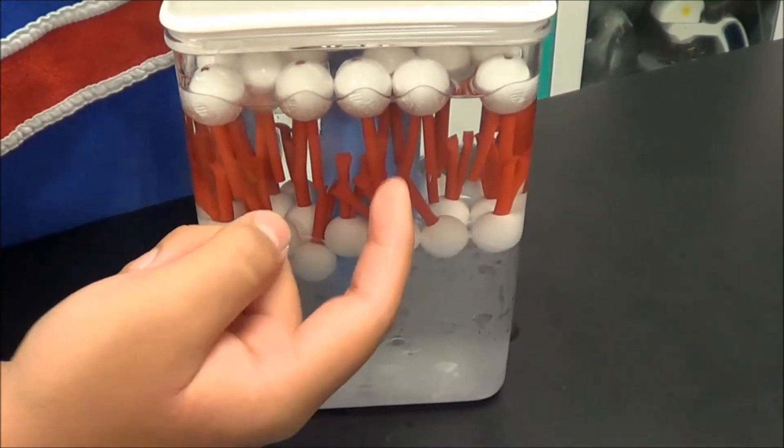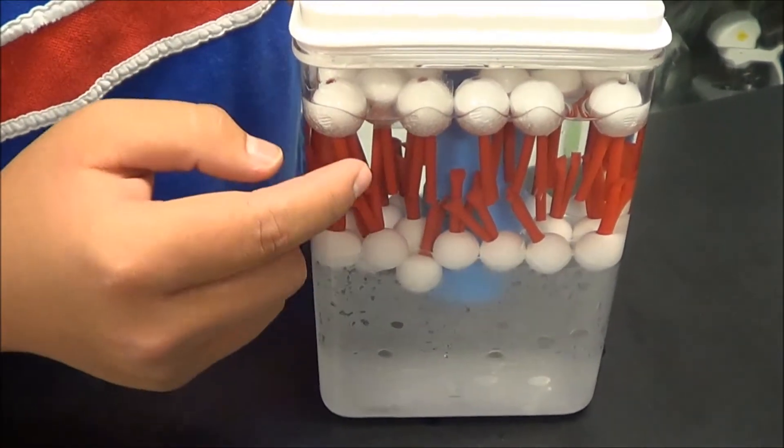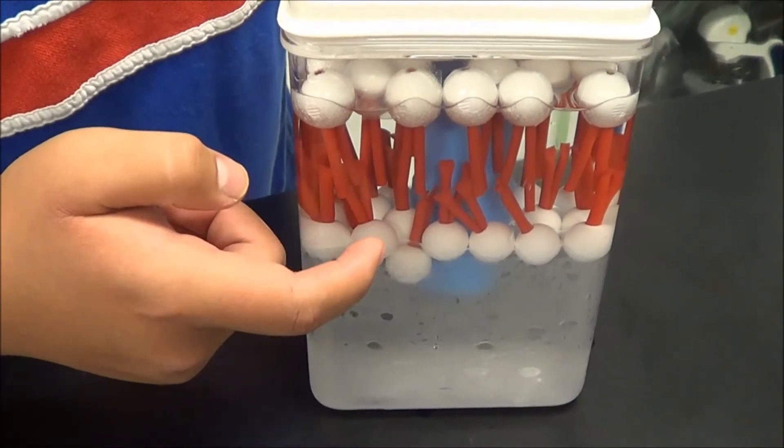The red thing right here is called the tail, which is a non-polar molecule that is repelled by water. The outside is a polar molecule which likes water.